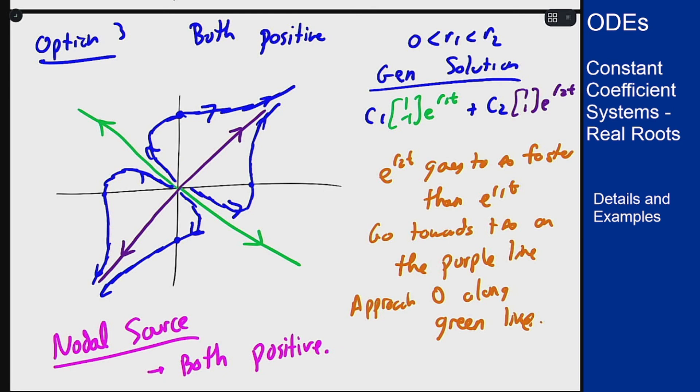Your three options: nodal sink both negative, saddle point one negative one positive, and nodal source both eigenvalues positive are the three main things you'll see when looking for phase portraits for these systems with real distinct eigenvalues.